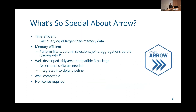So what's so special about Arrow? I just think it's underutilized and I'm a little salty about it — maybe it's only because I didn't know about it, but I feel like everyone should know about it. It's really fast. You can perform aggregations, joins, and filters all before bringing your data into working memory. There's no external software required, it's AWS compatible, it's tidyverse compatible, and best of all, it's free — no license required at this time.